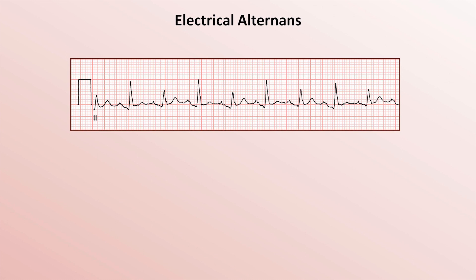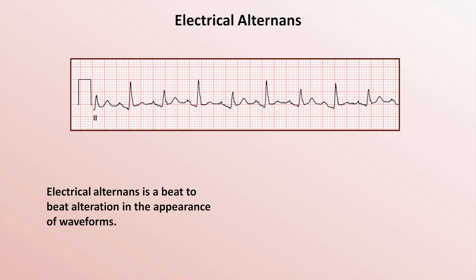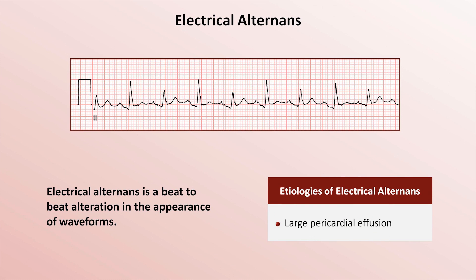The last abnormality of this video is electrical alternans — a beat-to-beat alteration in the appearance of waveforms. It most commonly manifests as a tall R-wave alternating with a short one. The only significant cause of this is a large pericardial effusion in which the heart literally rocks back and forth within a distended pericardial sac with each contraction. Although electrical alternans can be seen in effusions significant enough to cause cardiac tamponade, the presence of alternans does not necessarily suggest tamponade specifically.